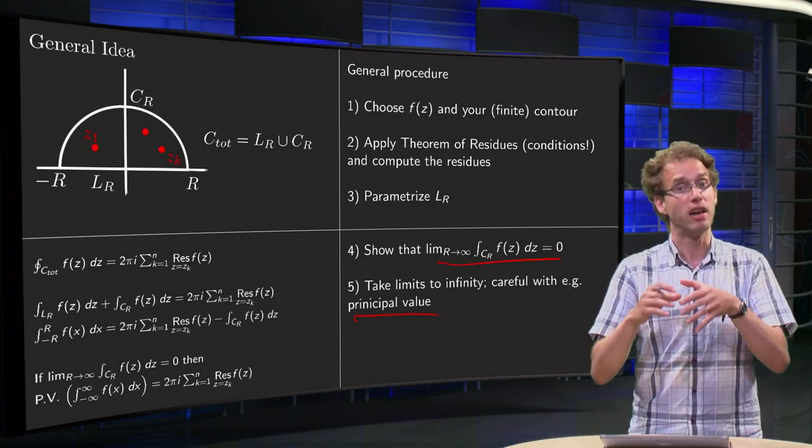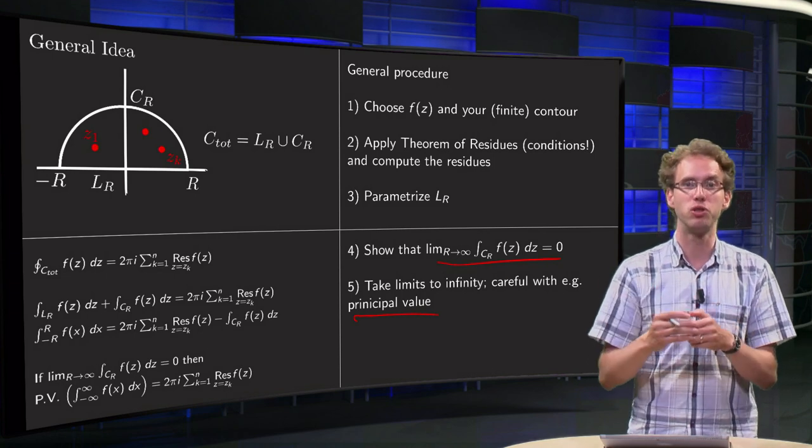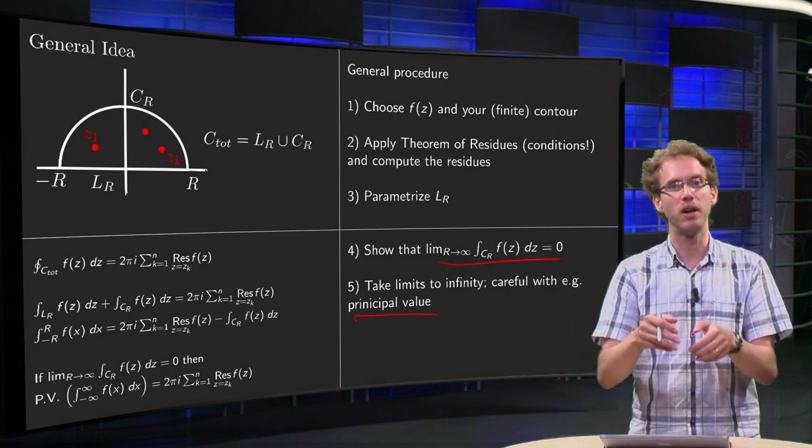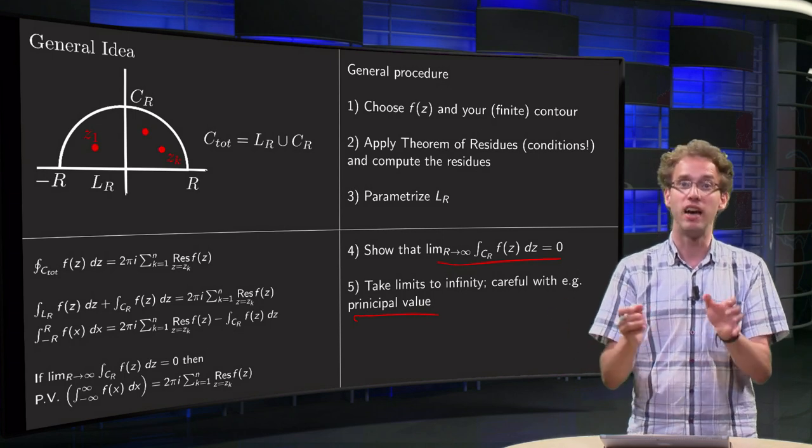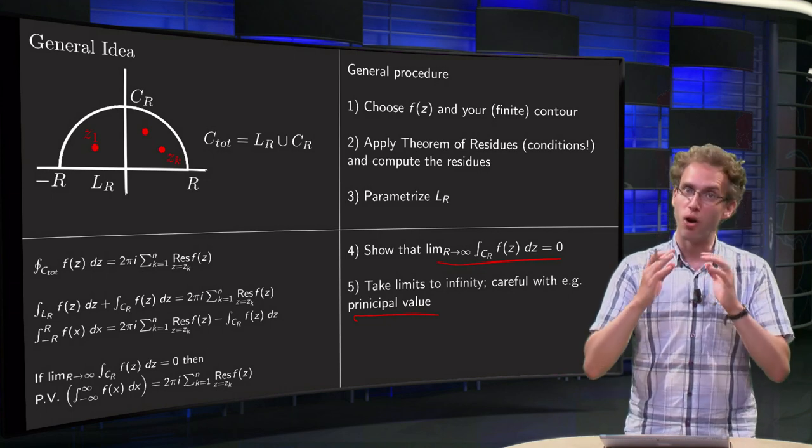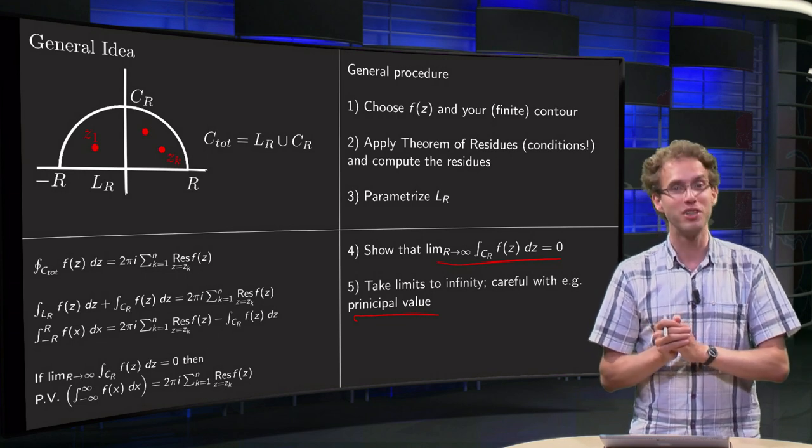And then, you have to show that if this principle value converges to your integral. So here you have to put everything together, take limits carefully and say something about the principle value. So those are the 5 steps you are always going to use in all the following examples of contour integrals.